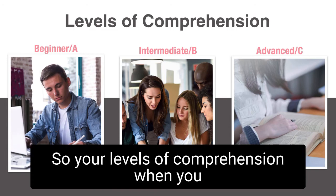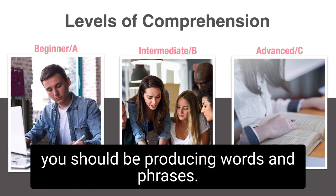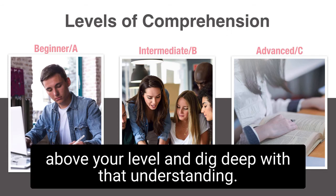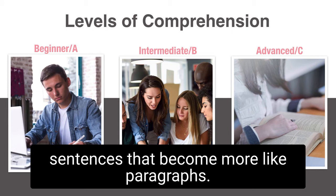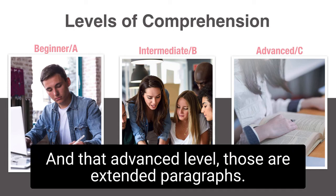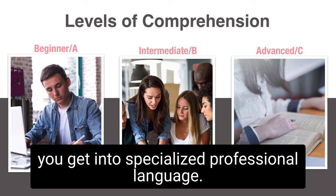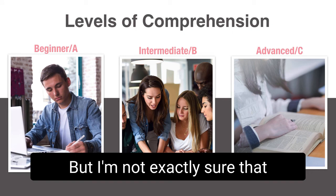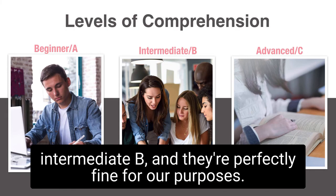At the beginner level, you need to focus on understanding words and phrases, and by the end you should be producing words and phrases. You want to go a little bit above your level. Intermediate starts with phrases and ends at sentences that become more like paragraphs. At the advanced level, those are extended paragraphs — think novels, books, plays. There are levels past this with specialized professional language like university lectures, but that's not relevant for most learners. Most of us stay in beginner A or intermediate B, and that's perfectly fine.